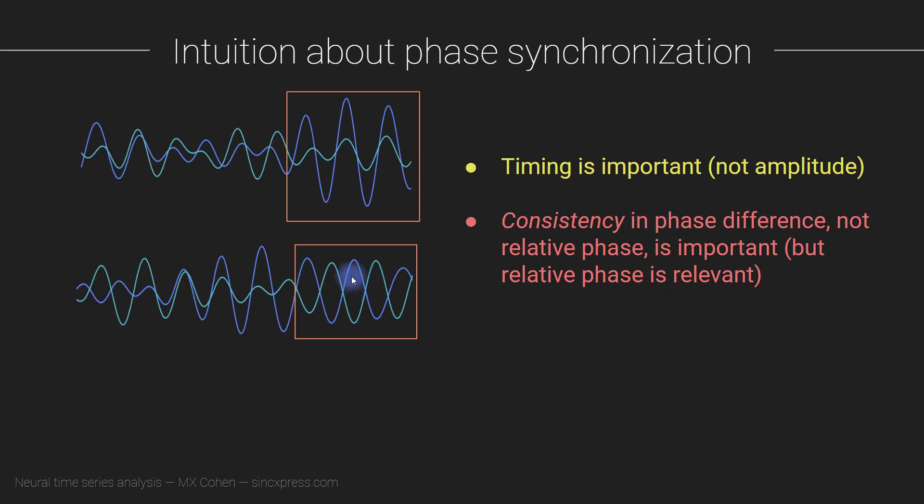In fact, there are entire measures of synchronization, alternative measures of synchronization that are based on the relative phase. But for standard phase synchronization, for phase clustering-based measures, what we are interested in is whether the phase difference is consistent over time between these two time series, these two electrodes. Again, you will see more about why that is and how that manifests in the equations for phase synchronization in the next video.